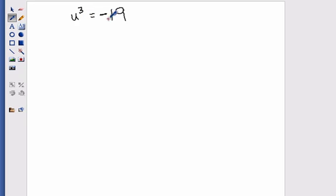Now if I have something like u to the third equals negative 19, I do the same process. I take the third root of both sides. So this is going to give me u equals the third root of negative 19.